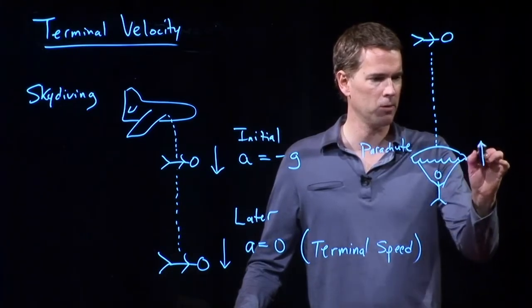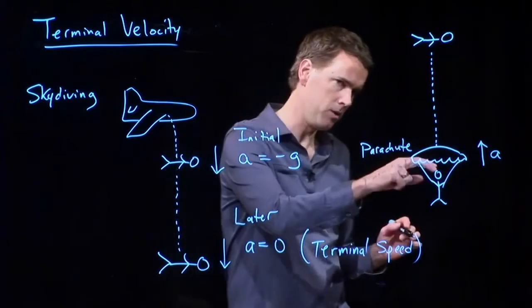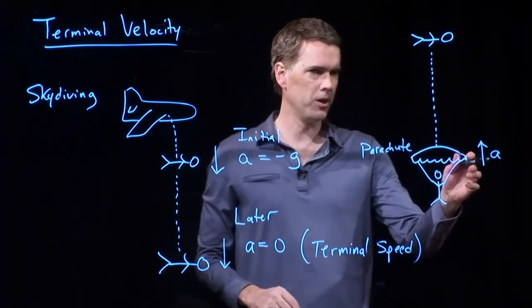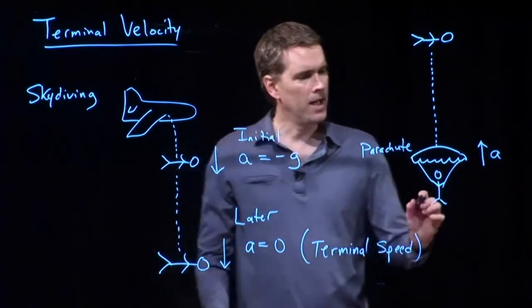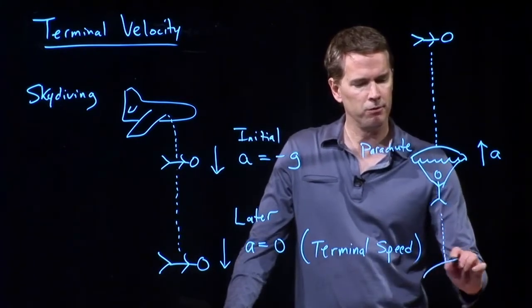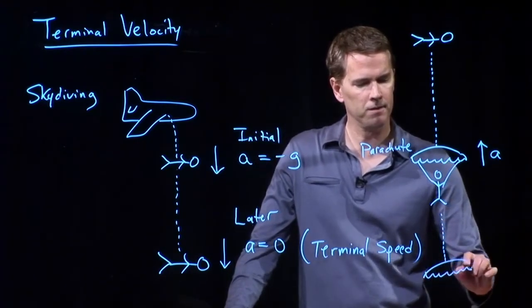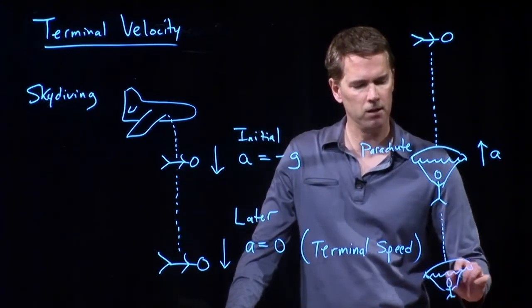Which direction is the acceleration when I open the parachute? Correct. Acceleration is, in fact, up. Since we are moving down, an acceleration upward is a deceleration, right? It's trying to slow us down. And then, later on, before I hit the ground, am I still accelerating upwards?